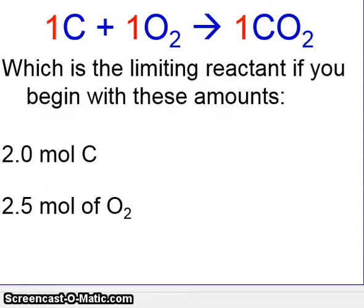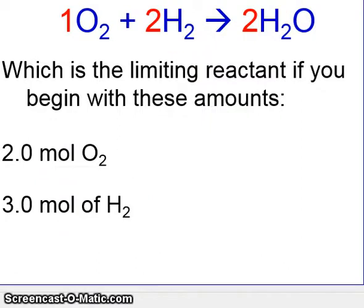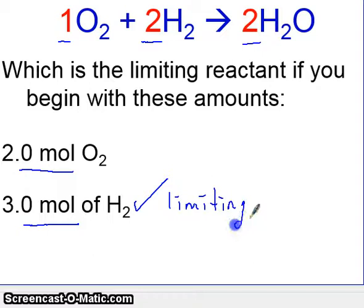Let's try a second example. This example is similar, except it's a different equation. Here we have one oxygen for two hydrogens producing two waters. Which is the limiting reactant if we begin with two moles of oxygen and three moles of hydrogen? In this case, the limiting reactant is hydrogen. This is the limiting, and this is the excess.